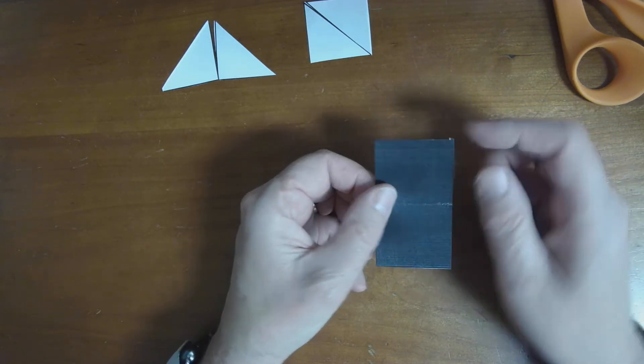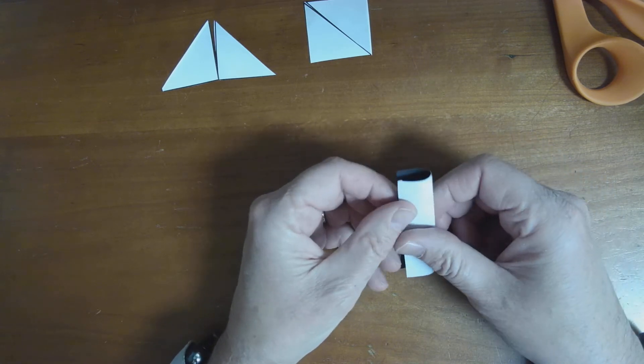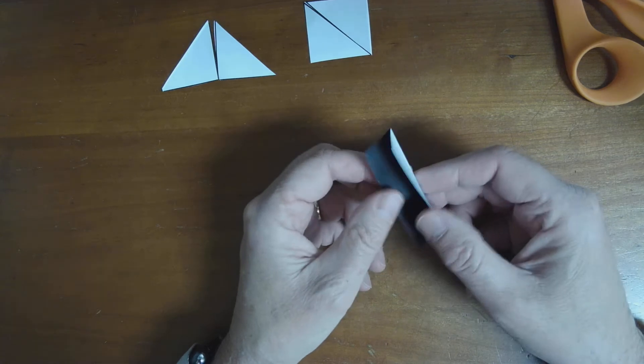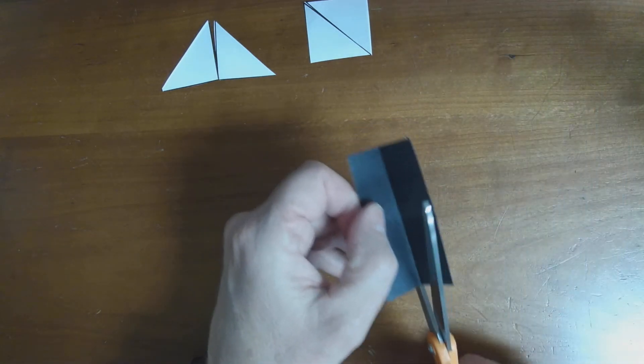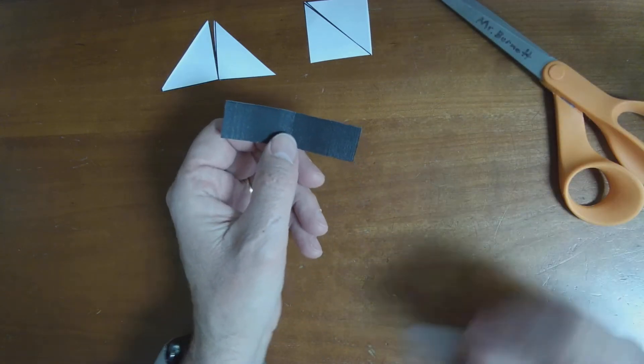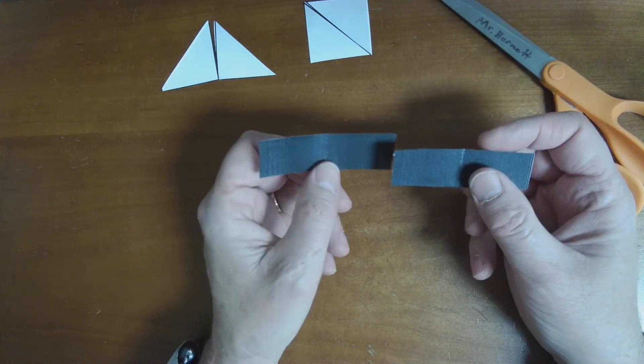But I'm going to fold it this way. What is inside of this rectangle? Two more rectangles, right? So I just cut that along there. Now I have two rectangles instead of one.